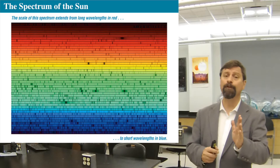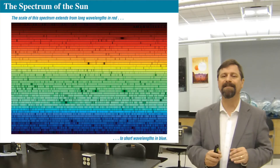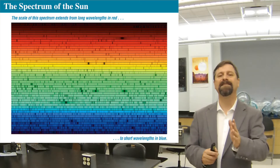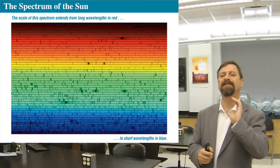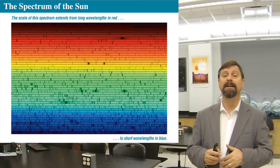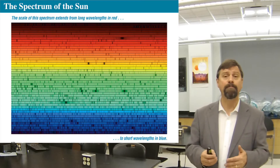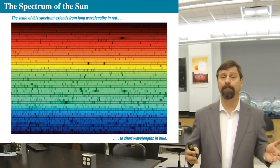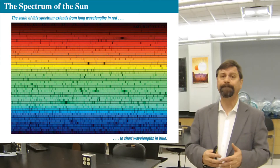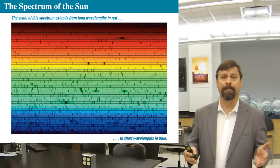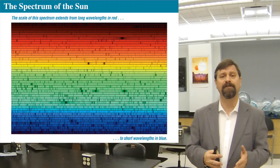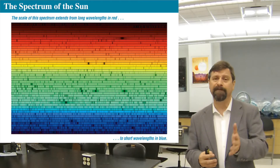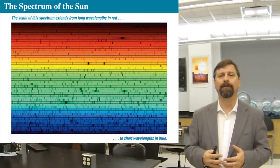That sunlight then passes into our spectroscope, which might simply be a prism or some other device like an echelle spectrograph or reflecting off a surface.